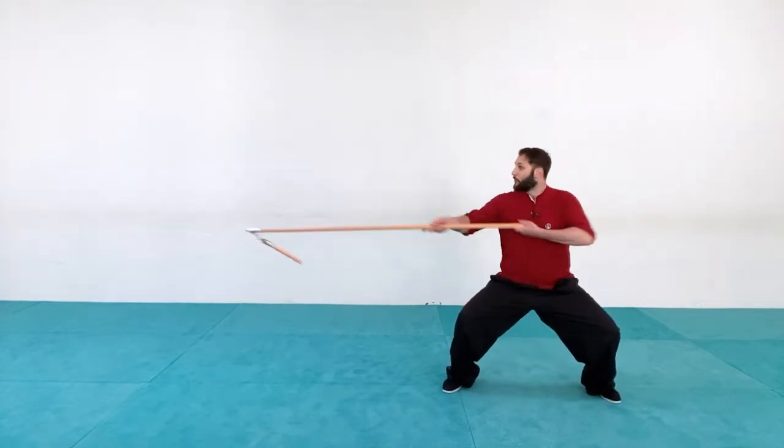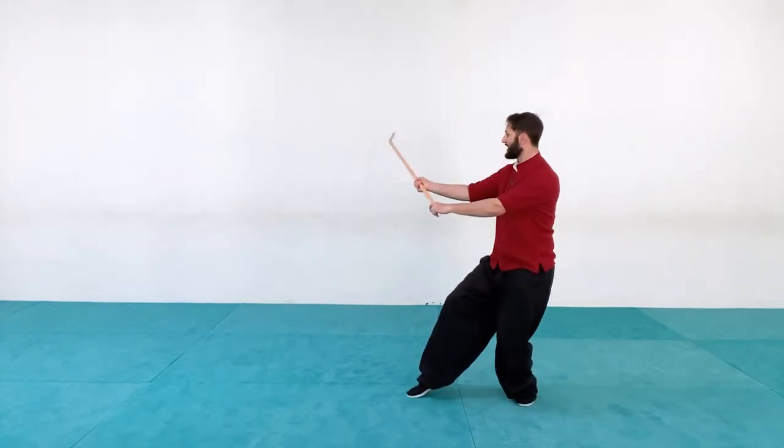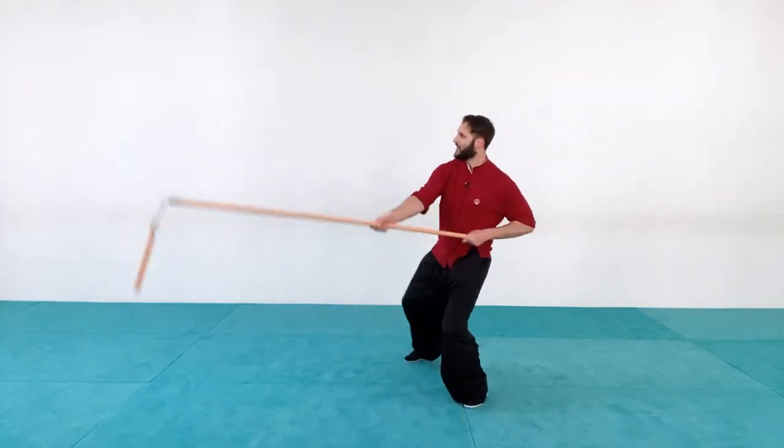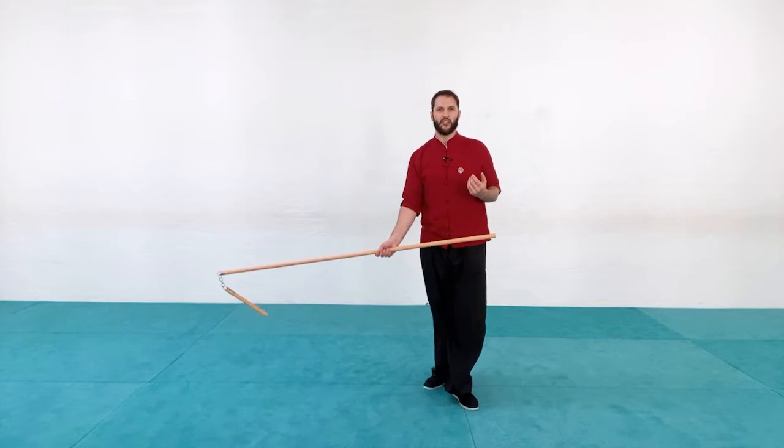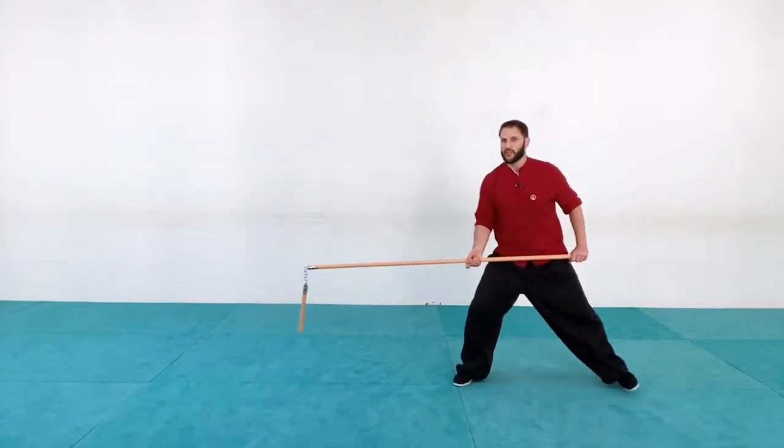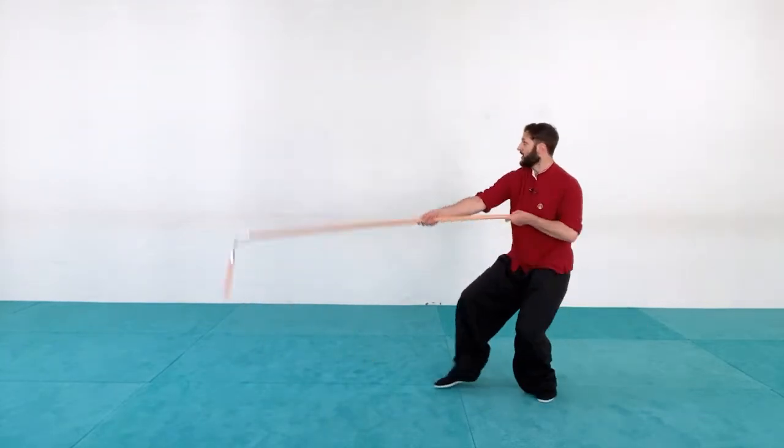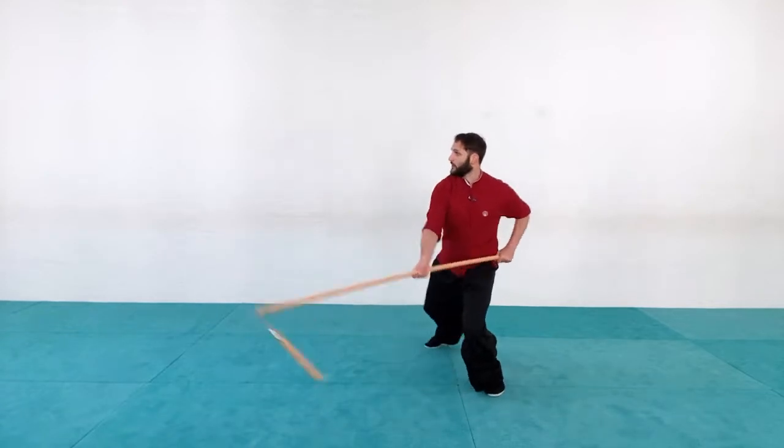So again, we have poke, moving in, cat stance, then low, low, head up, down. Now, once you get that down, you want to start speeding it up. So again, we have poke, step in, one, one, two, three, four, five.